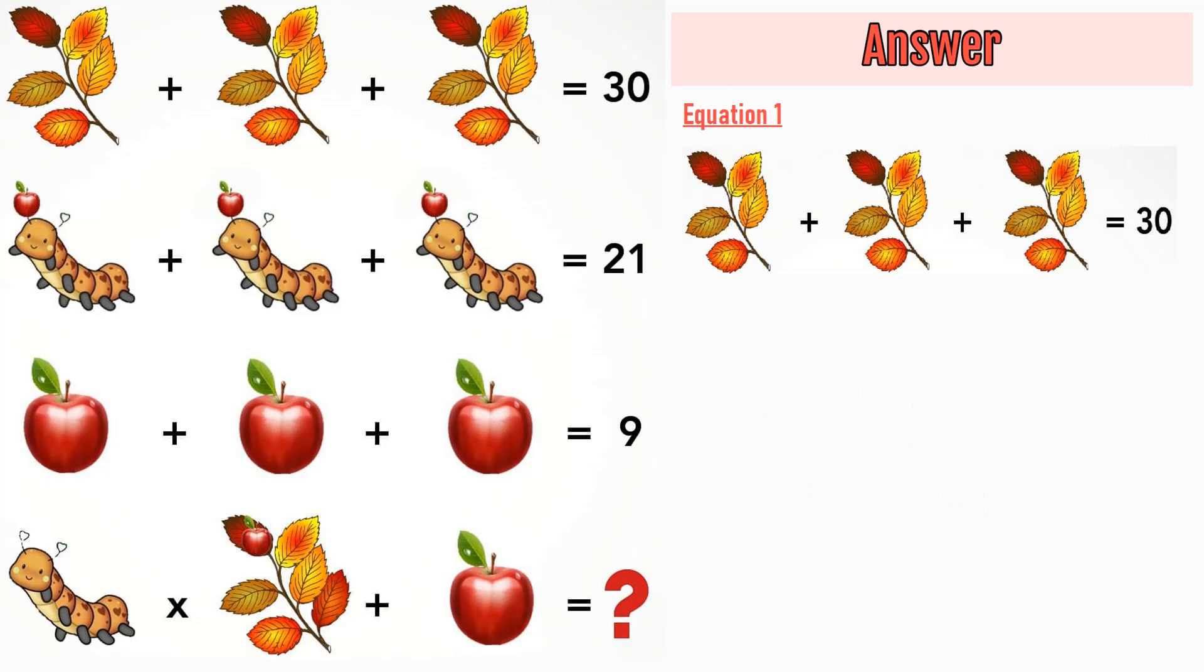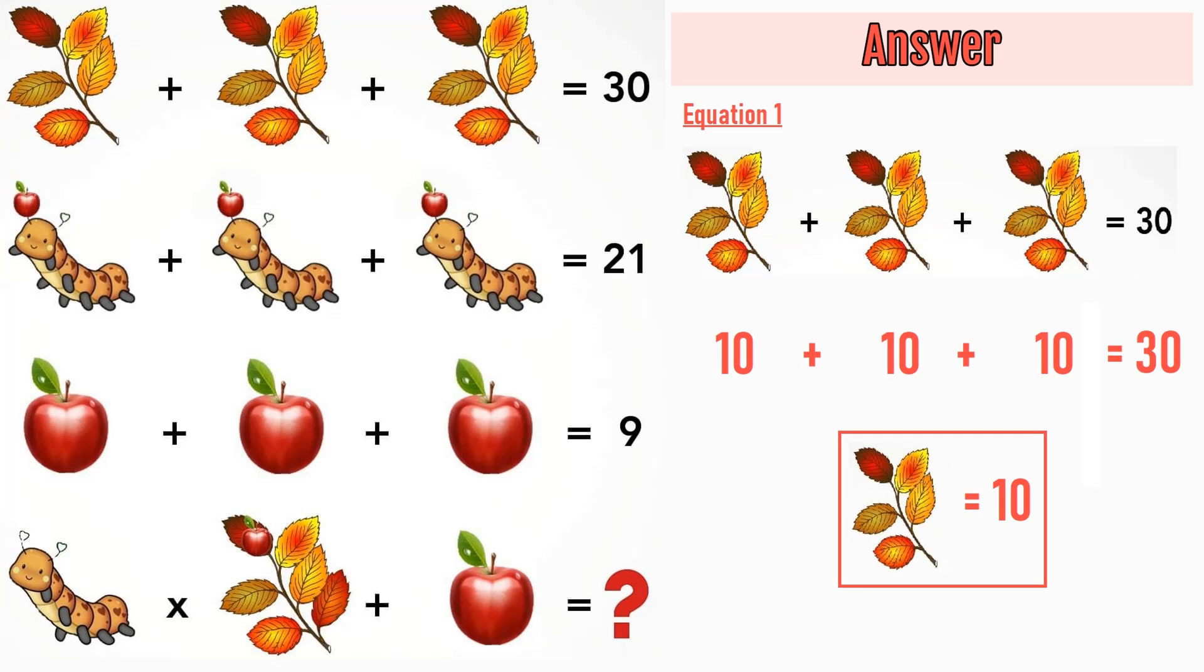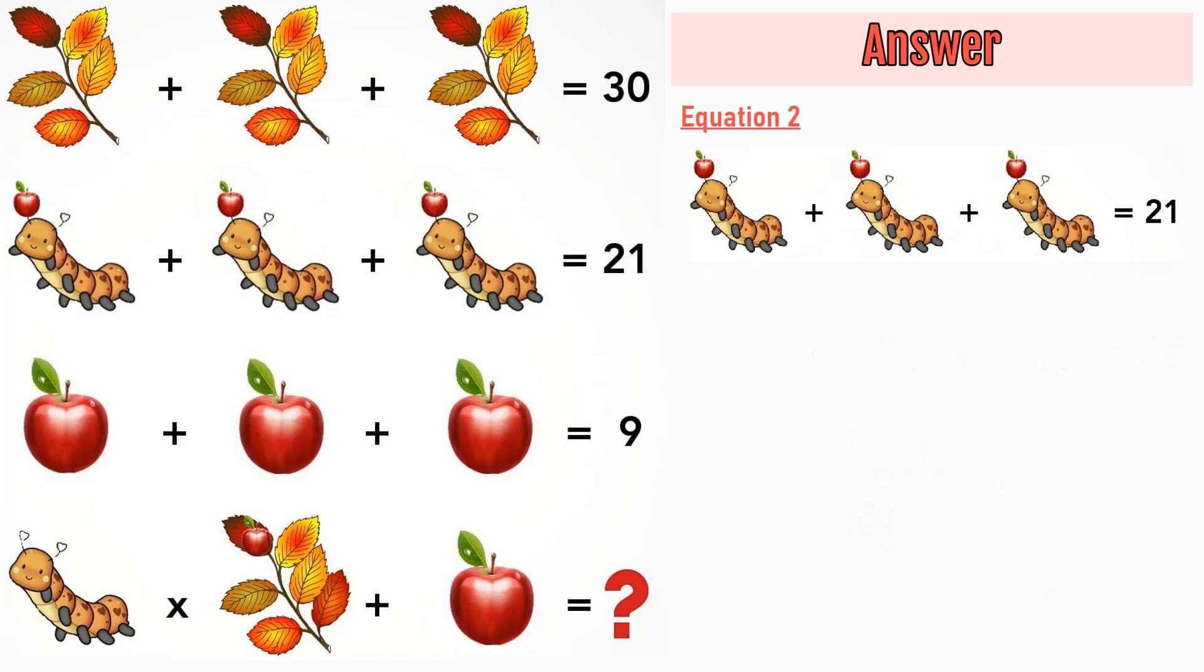So let's check equation number 1 which says 5 leaves plus 5 leaves plus 5 leaves is equal to 30. 10 plus 10 plus 10 is equal to 30. 5 leaves is equal to 10.